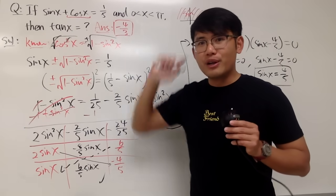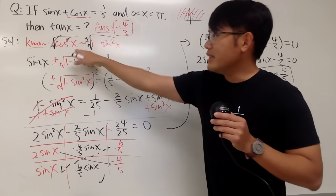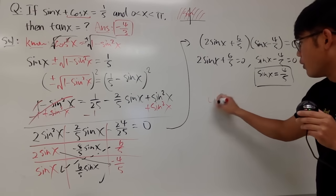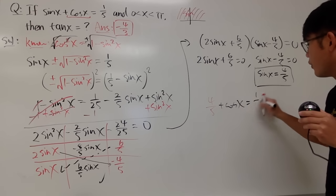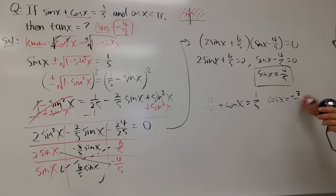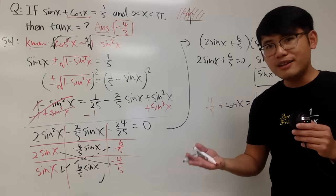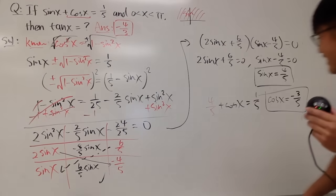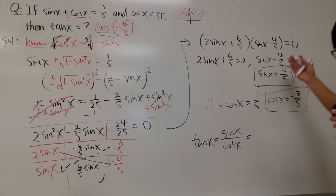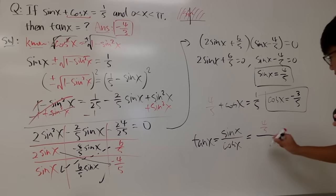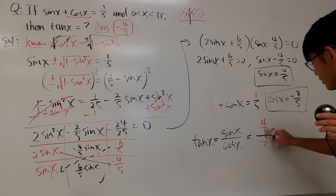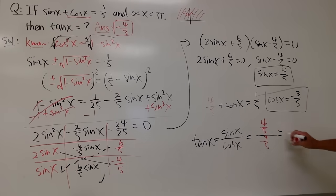Whenever you know sine, you can also find its best friend cosine. Using the original equation: 4 over 5 plus cosine x equals 1 over 5. Subtracting 4 over 5 from both sides gives cosine x equals negative 3 over 5. Now for tangent: tangent x equals sine x over cosine x, which is (4 over 5) divided by (negative 3 over 5). Multiplying top and bottom by 5 to cancel, we end up with negative 4 over 3.